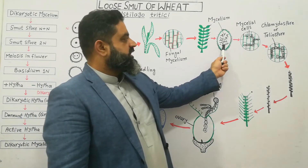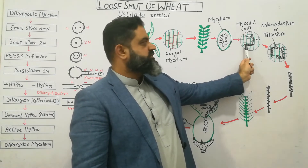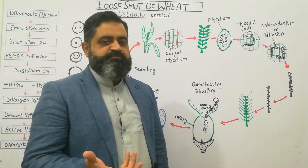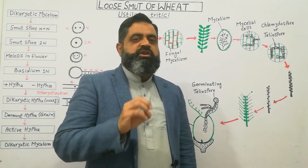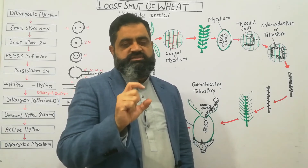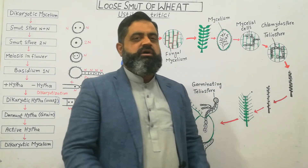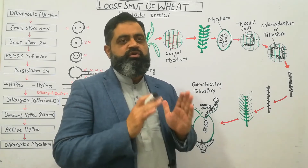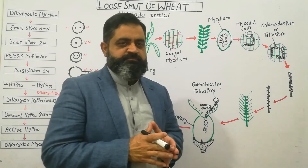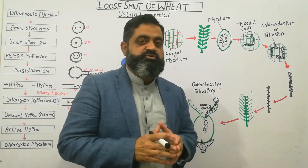Later on, inside the developing seed, these mycelium change into mycelial cells, and these mycelial cells then change into spores known as chlamydospores or teliospores. These teliospores are produced in enormous amounts, which turns the seed kernels into a black mass. The whole ears of wheat become black and soot-like, and the whole crop can be destroyed if all the flowers of the wheat are infected by this fungus, leading to a great loss and potential bankruptcy for the farmer.